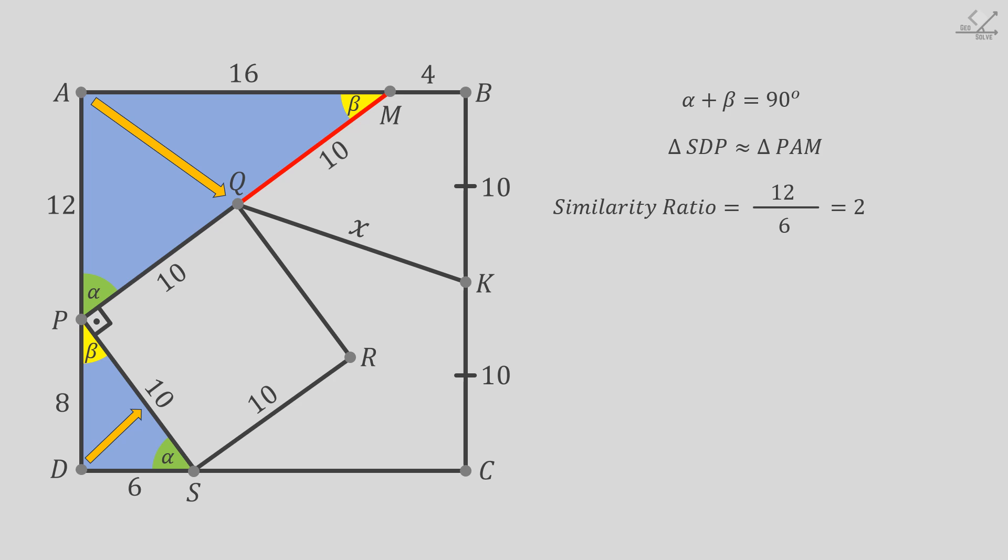After that, let's extend this red line a little bit more and intersect with the side of the large square. This angle will be beta, so this angle will be alpha. If you notice, this small triangle is also similar to the previous ones.